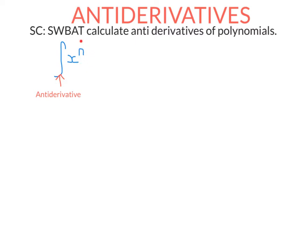We'll start with a function like x to the power of n. This symbol here means integral or antiderivative — it's telling us to calculate the antiderivative of this function. What do I mean by antiderivative? I am saying: find another function — so your answer is a function — so that when I differentiate it I get this. I'm going the opposite way of differentiation.